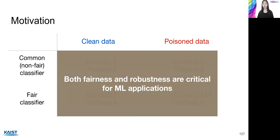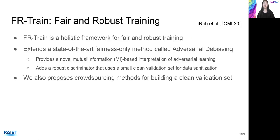Therefore, it is necessary to consider fairness and robustness together to prevent critical issues in machine learning applications — and to this end, this study proposes FR-train. The main contributions are: first, a holistic framework for fair and robust training that extends the state-of-the-art adversary debiasing algorithm which performs a two-player game to achieve high fairness; second, a novel mutual information-based interpretation of adversarial learning, used to architect an additional robust discriminator that uses a small, clean validation set for data sanitization; and third, crowdsourcing methods for constructing such clean validation data, with released crowdsource datasets.